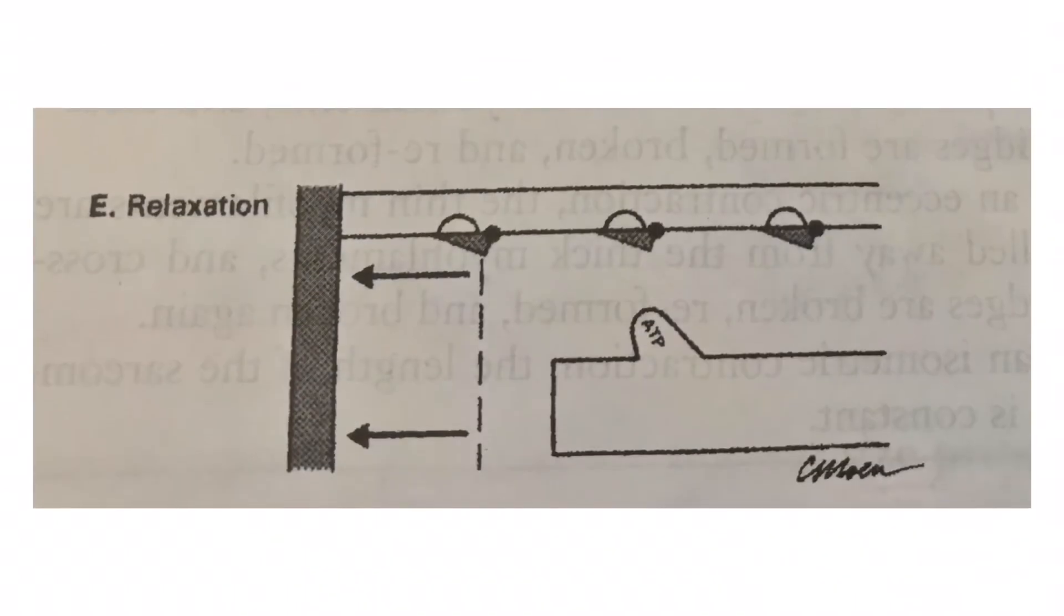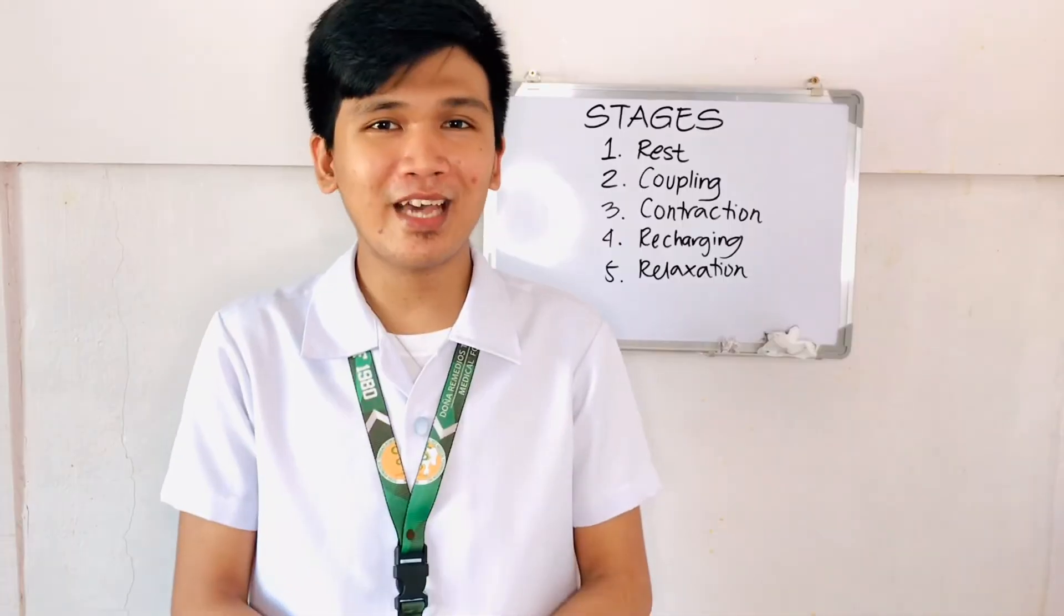The last stage is relaxation. It happens because there is no more excitation. So when there's no longer excitation, the calcium ions will now be removed from the vicinity of the actin myofilament and will return to the storage site of the sarcoplasmic reticulum. And then the troponin returns to its original shape, covering again the active sites on the actin myofilament.